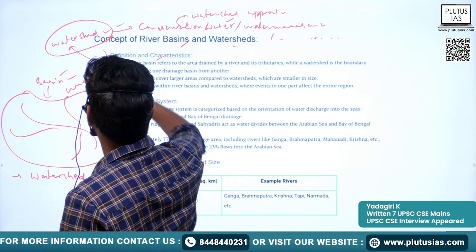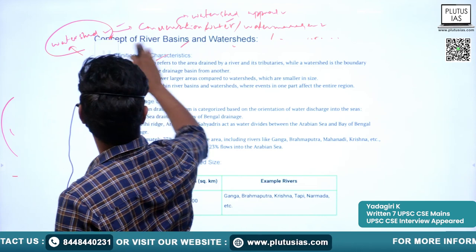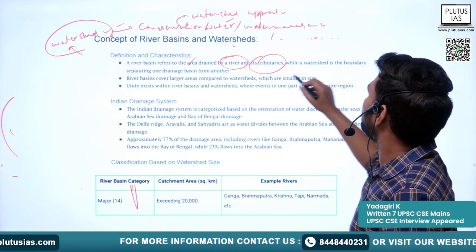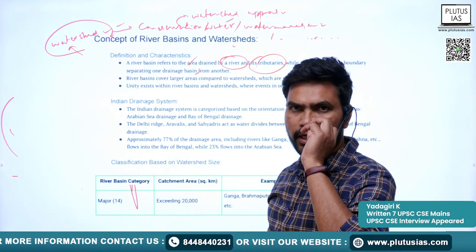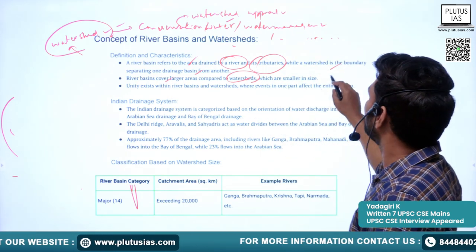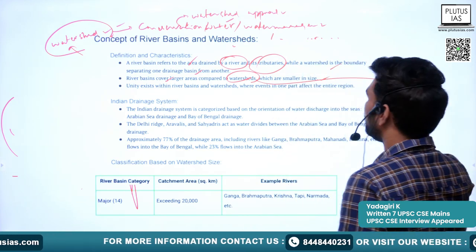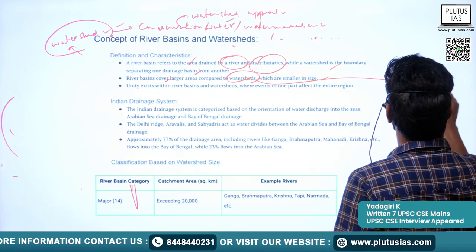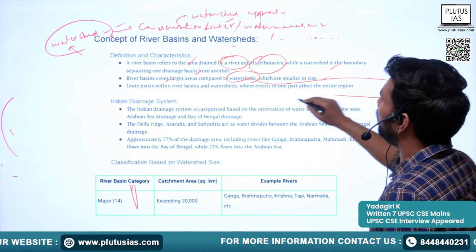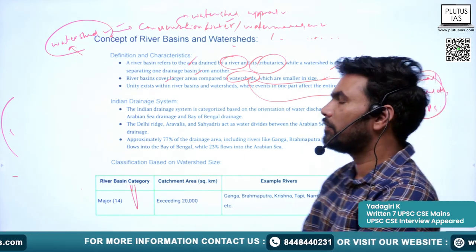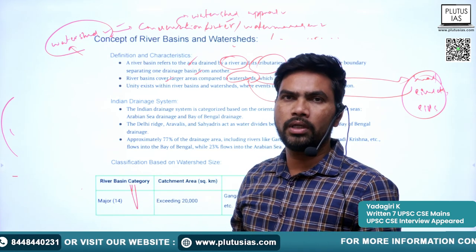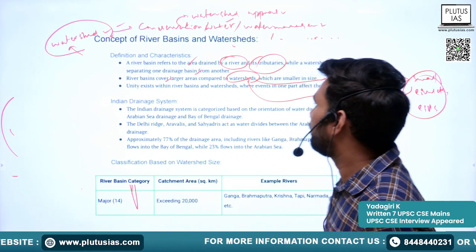To summarize the definitions: a river basin refers to the area drained by a river and its tributaries, while a watershed is the boundary separating one drainage basin from another. River basins cover larger areas compared to watersheds, which are smaller. The basins drained by small rivulets and rills are sometimes interchangeably called watersheds. Major basins in India include the Ganges, Brahmaputra, Godavari, Krishna, and Kaveri.